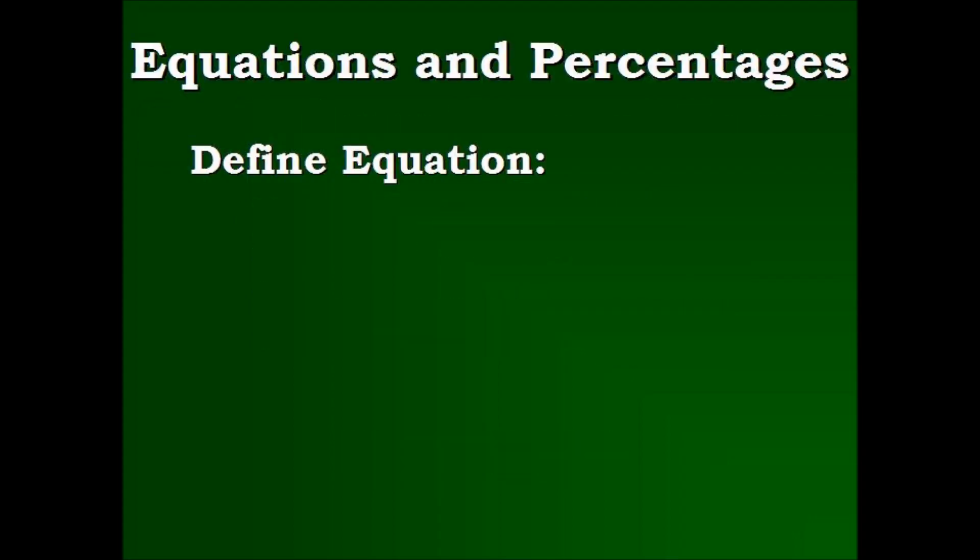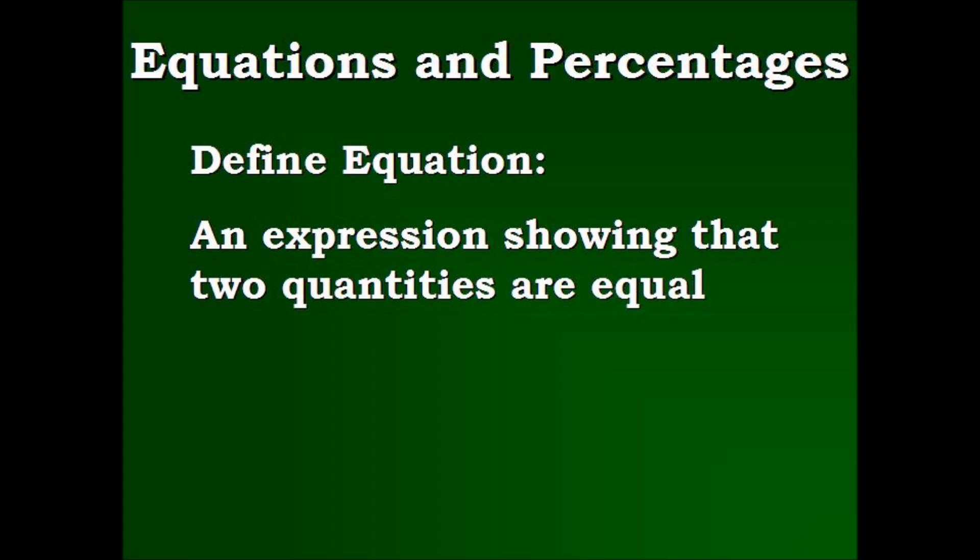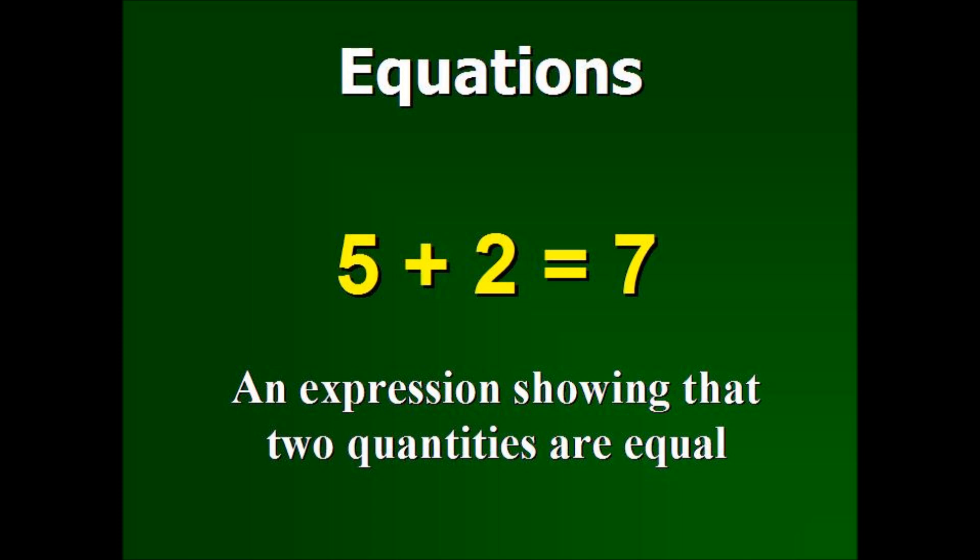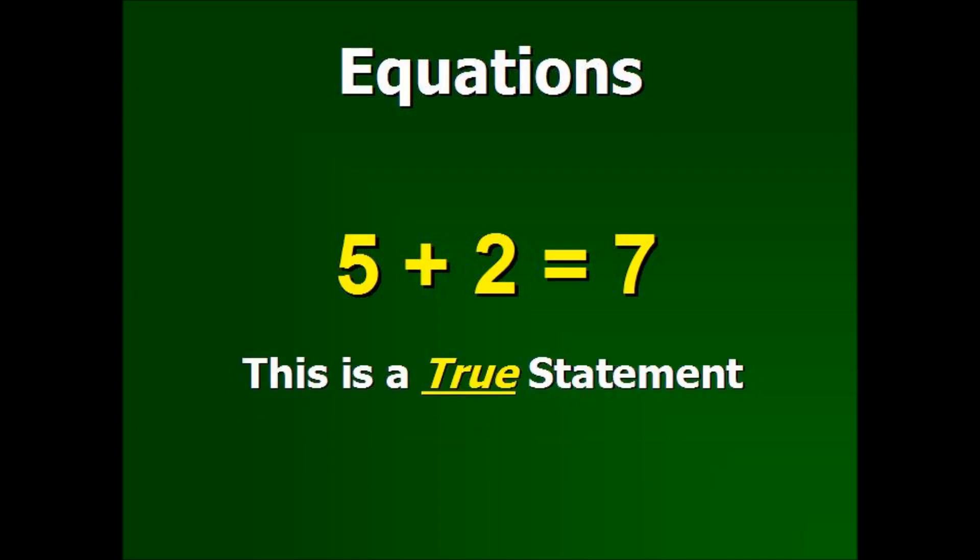To begin, we're going to very quickly define equation and percentages. An equation is an expression showing that two quantities are equal. Here's an example: 5 plus 2 equals 7. The equation is identified by the equal sign. Again, both expressions on both sides of the equal signs are equal. So this is a true statement.